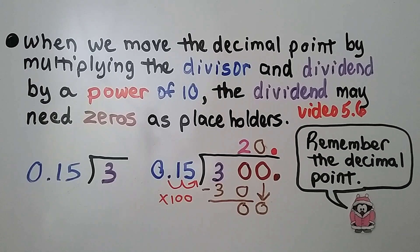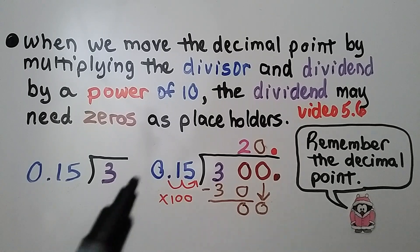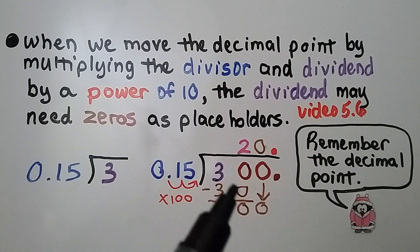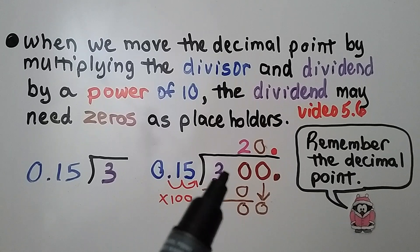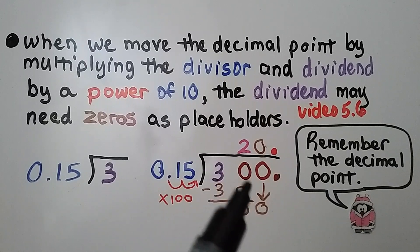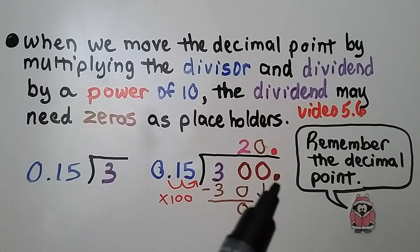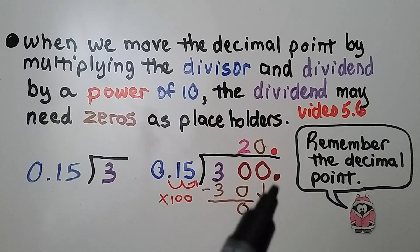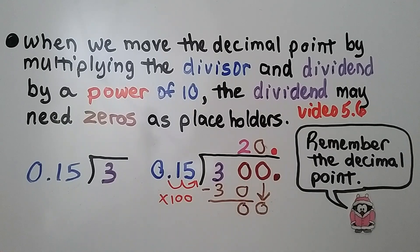The decimal point is going to hop two places to the right, which means this decimal point needed to hop two places to the right, and in the quotient it goes directly above the new position. We learned that in video 5.6, which is linked in the description.